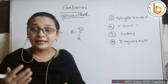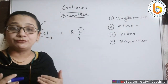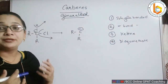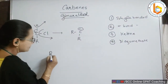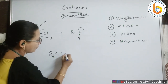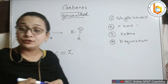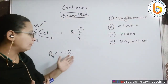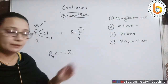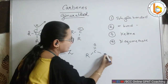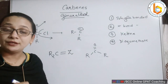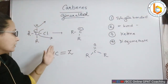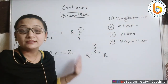Let us talk about the second method of preparation of carbene, which is another highly unstable reaction intermediate. How can it be formed? Say for example I have R₂C double bond Z. This Z can be anything — it can be an oxygen, it can be a sulphur, any heteroatom. Z can be nothing but a ketone: R₂C double bond O. It can be a thiol, anything like that.